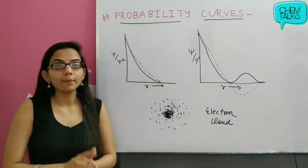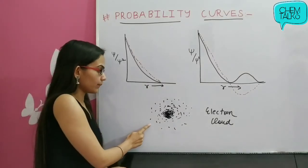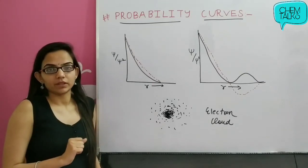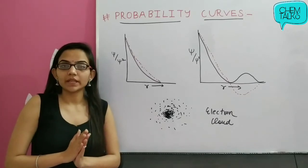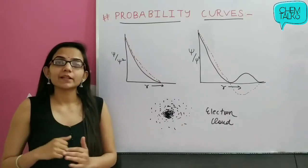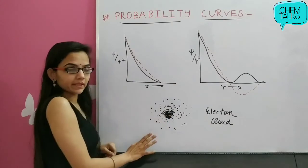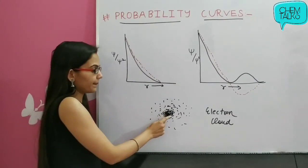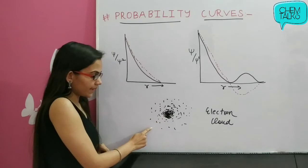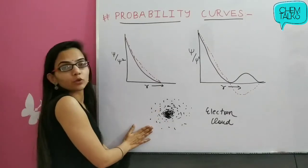First, let's understand this diagram — the electron cloud representation. This is also a representation of electronic distribution. Where we show a darker region, we indicate there is more electron probability. Where we represent a lighter region, there is less probability. As you can see, the darkest region is represented at the center. So the darker region suggests maximum electron probability, and as we move outward — as the radius increases — the probability decreases.